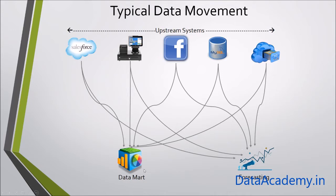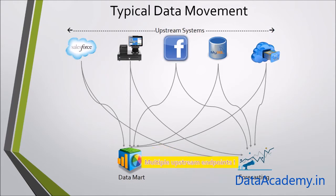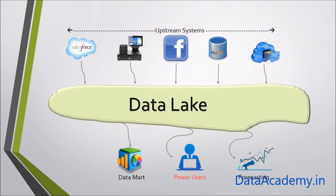Instead, downstream applications like data mart depend on data that is generated in other systems such as Salesforce and Facebook. A downstream application like data mart will often need to interface with these multiple applications through whatever method is supported, such as FTP, HTTP, APIs, database calls, and so on. The number of systems and their interfaces can change as the architecture of one of these underlying systems changes, and so do the connectors.